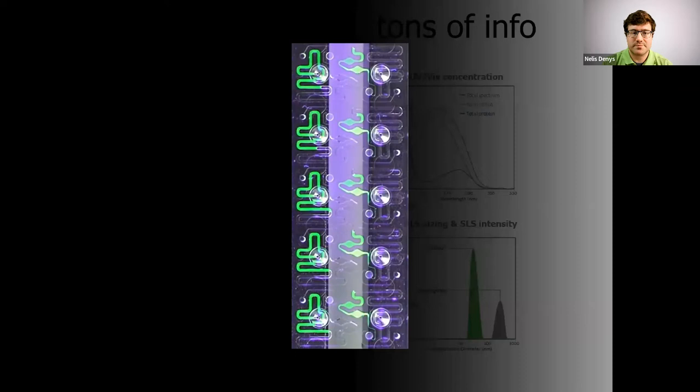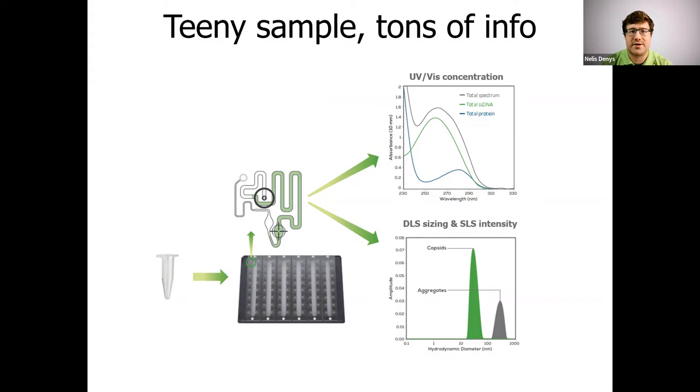So from just those two microliters, you get information from these two technologies, UV-VIS for concentration and DLS for size. And while we're doing the DLS experiment, SLS intensity data is also read. And so samples can be read from one to 96 samples at a time. Stunner's AAV quant application will combine all the pieces of the puzzle into the full story about your AAV.